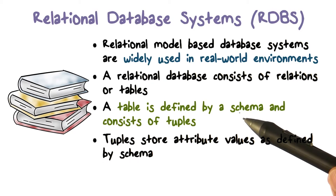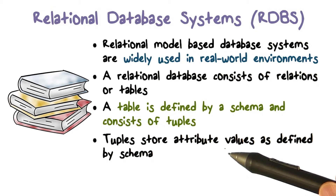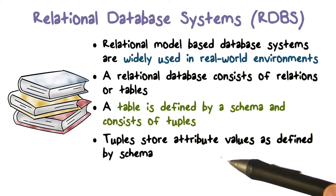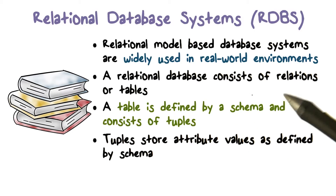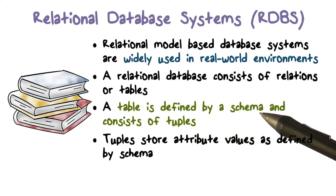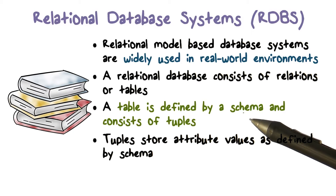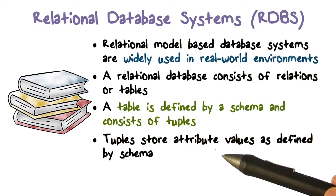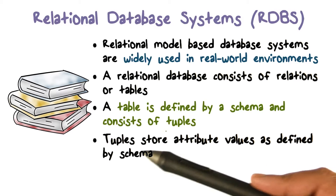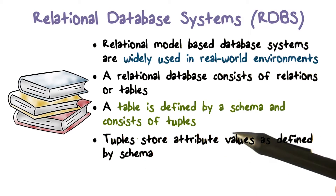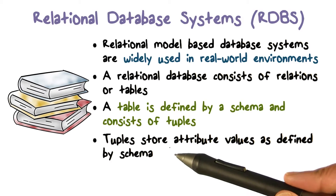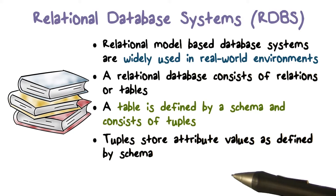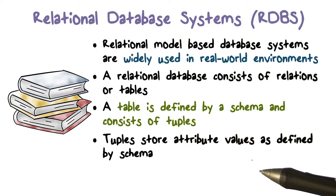We talked about columns or attributes, but of course then we have rows in a table. A given row is going to contain a value for each of the attributes as defined by the schema. So each cell of a table basically has a value. These rows are called tuples. Tuples are attribute values that make up a row of the table, and what these values are is again defined by the schema.